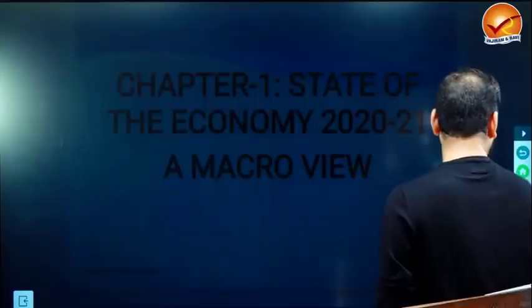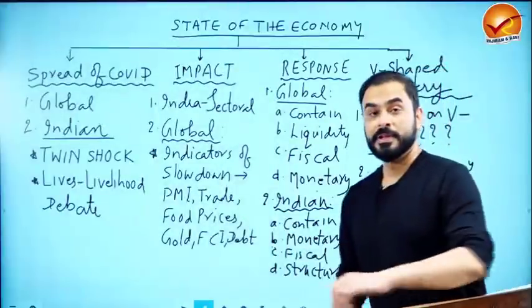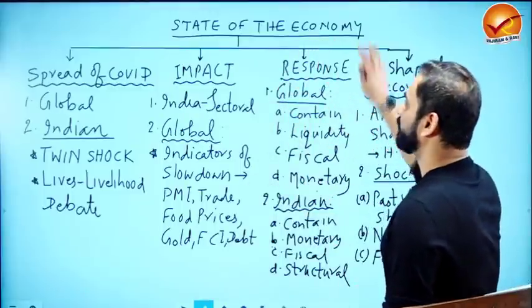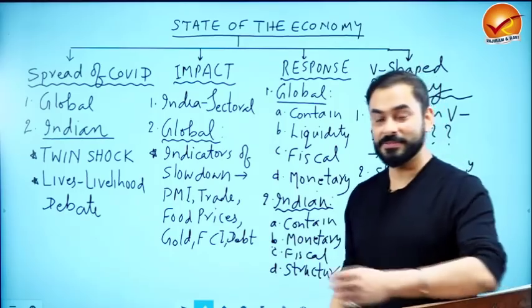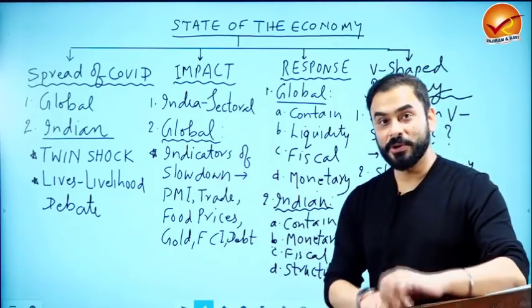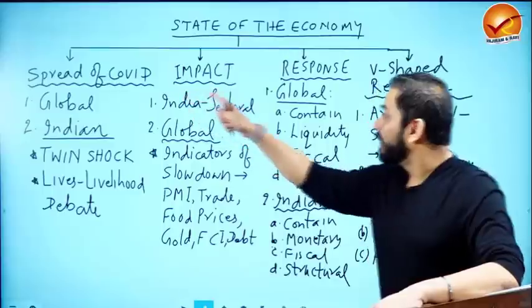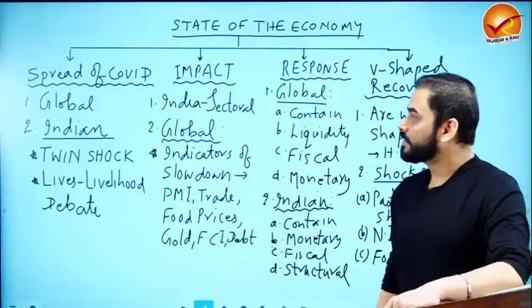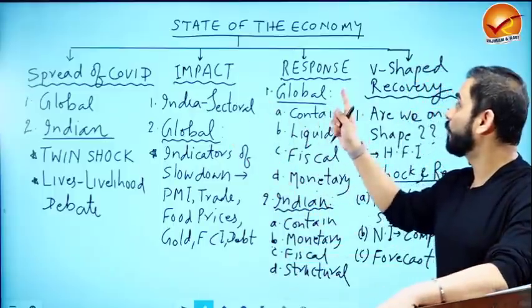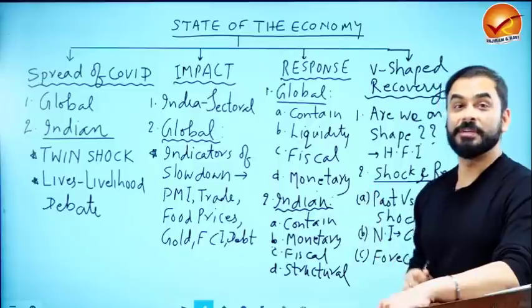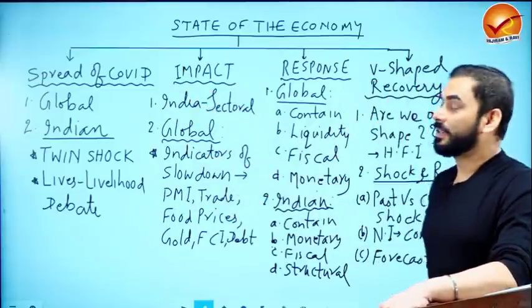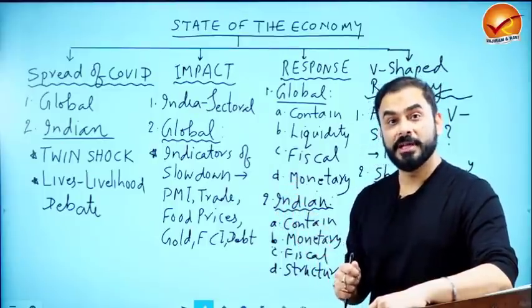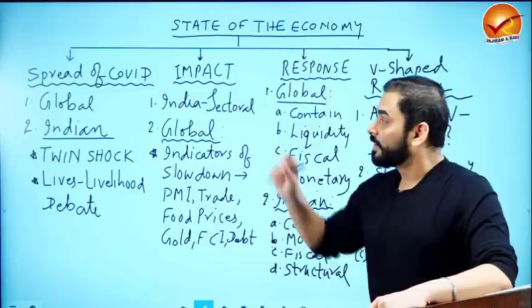I've divided this chapter into four parts. The first part covers the spread of COVID — how it was spreading globally and in India. The second part is the impact on the economy based on the speed of transmission. We will also revisit the debate of lives versus livelihood that we discussed in Volume 1.